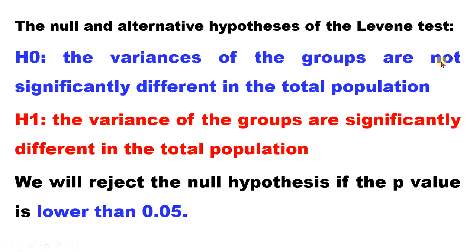The null hypothesis states the variance of the groups are not significantly different in total population. We will reject our null hypothesis in favor of the alternative if the p-value is less than 0.05. If it is greater than 0.05, we retain the null hypothesis or fail to reject it.